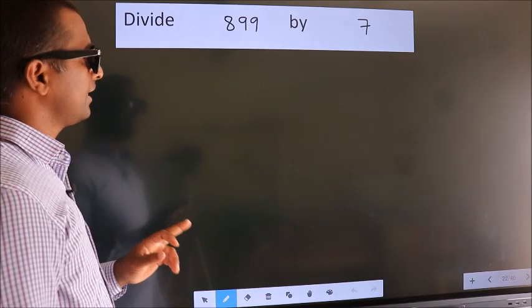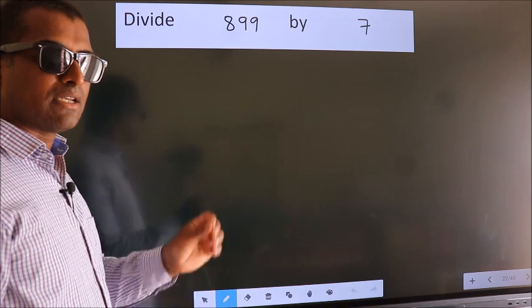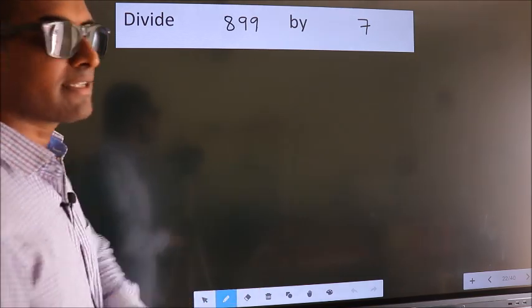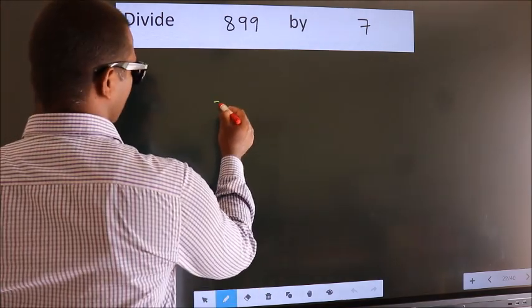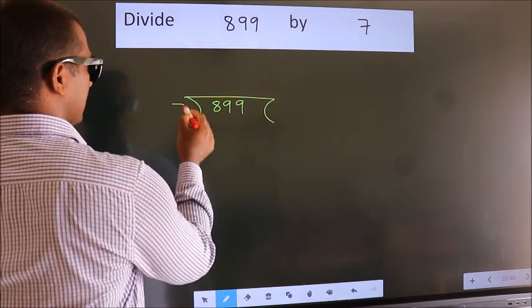Divide 899 by 7. To do this division, we should frame it in this way. 899 here, 7 here.